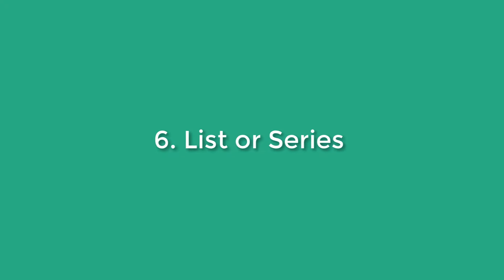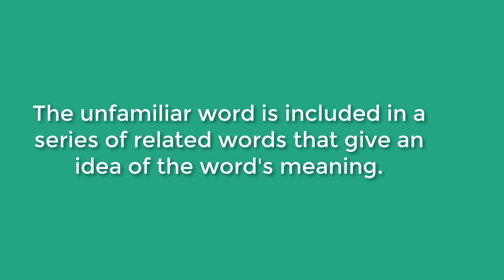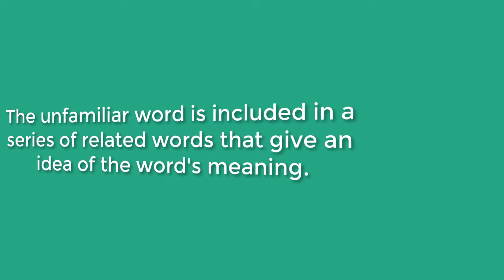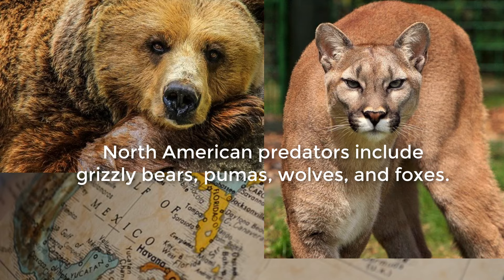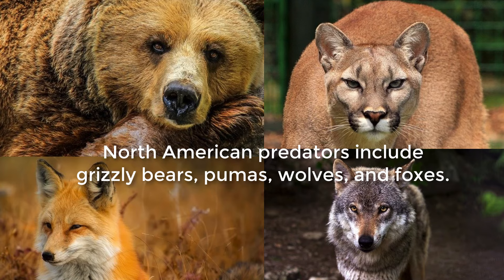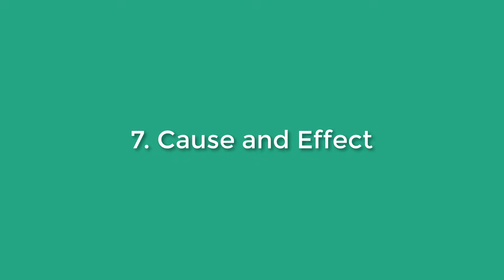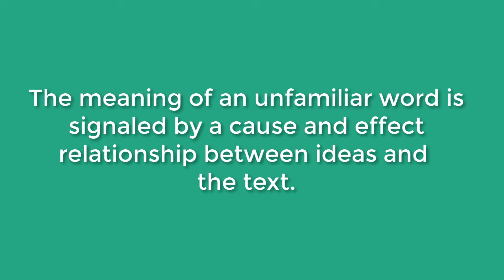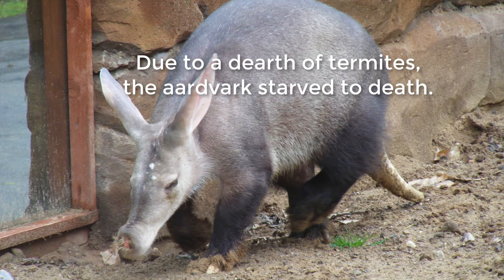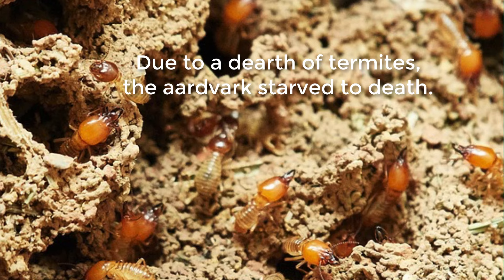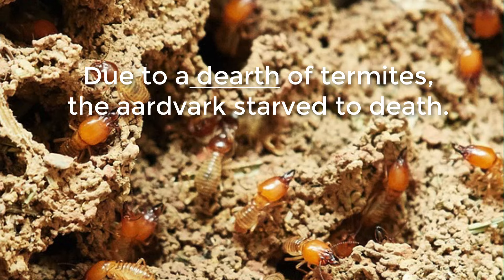The sixth type of context clue is the list or series. The unfamiliar word is included in a series of related words that give an idea of the word's meaning — here you can also refer back to punctuation context clues because you will see commas. For example: North American predators include grizzly bears, pumas, wolves, and foxes. The next type of context clue is cause and effect. The meaning of an unfamiliar word is signaled by a cause and effect relationship between ideas in the text. For example: Due to a dearth of termites, the aardvarks starved to death. We can infer that aardvarks eat termites, and if there is a dearth of termites, that means there aren't a lot of termites for the aardvark to eat.